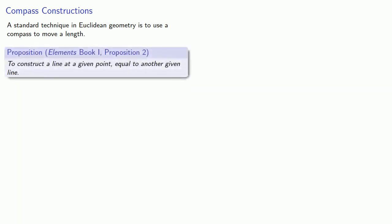Let's look at Euclid's second proposition. And this goes to a standard technique in Euclidean geometry, which is to use a compass to move a length. But can we really do that? And this actually requires a proposition to construct a line at a given point equal to another given line.